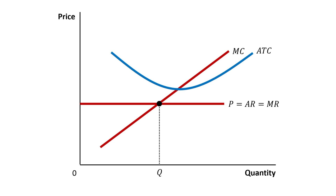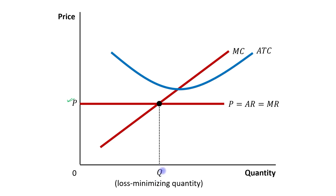This Q will be referred to as the loss-minimizing quantity. At this Q, the price is OP. If I want to find out the average total cost at this output level, I look at where the vertical line from Q meets the average total cost curve. The line needs to be extended slightly to intersect the ATC curve at this output level.